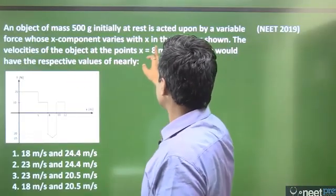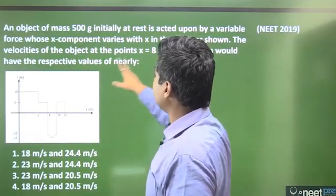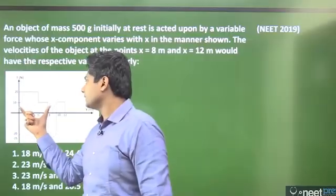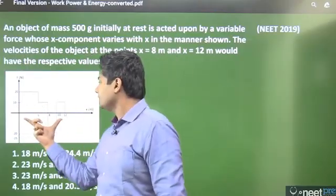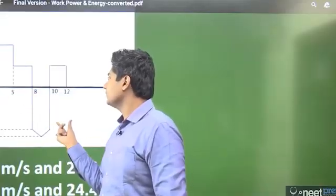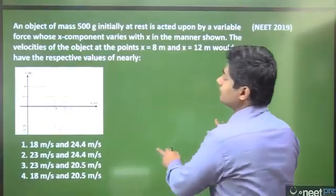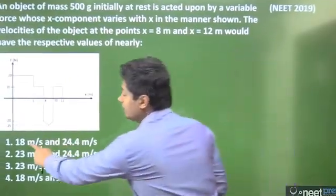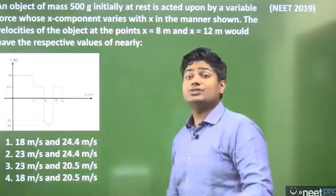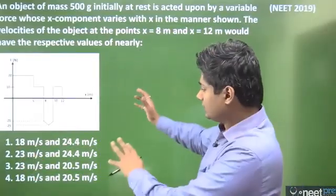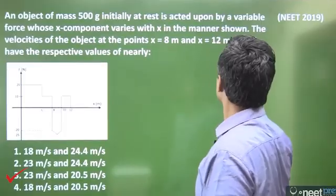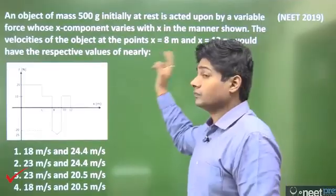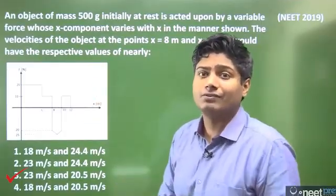The velocities of the object at points x equals 8 meter and x equals 12 meter are asked. For x equals 8 we'll write the work done up to that point and equate it to change in kinetic energy. Because it's not asking work done, it's asking final speed, so final speed will come after applying change in kinetic energy. It's a slightly advanced question but simple, not that difficult. Mass is given 500 grams in 2019, work calculations.